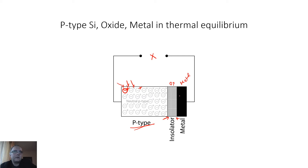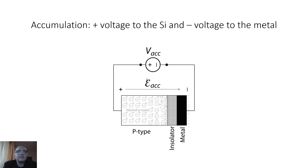Because of the insulator between the semiconductor and the metal, no current is possible to flow between the plates of the structure. Let's discuss the first mode of operation, which is called accumulation mode. For it, we apply an external voltage with the positive side connected to the p-type semiconductor and the negative side to the metal plate.